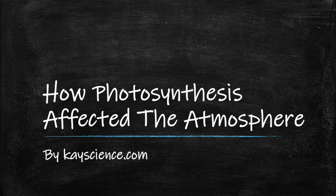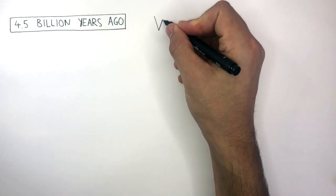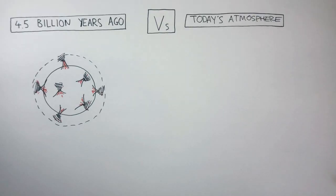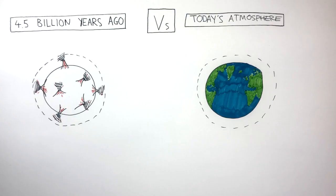How Photosynthesis Affected the Atmosphere. 4.5 billion years ago, the Earth's atmosphere was very different to today's atmosphere. Ancient Earth had a lot of volcanic activity, which caused Earth to be very hot and drastically affected Earth's atmosphere. Whereas in today's Earth, there is a lot less volcanic activity, so our atmosphere is very different.